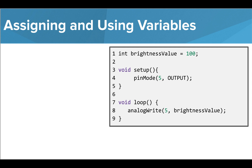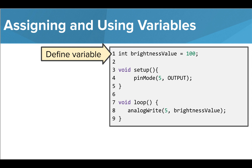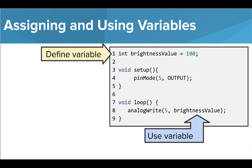Let's look at adding a variable to control commands in our programs. The first thing we need to do is assign it. We do this by writing the type int and then the variable's name, followed by an equal sign and the value we want to assign it. To use the variable, we plug its name wherever we want to use its value. In this case, we want the value of the brightness value variable, which is 100, to control the brightness of our LED.